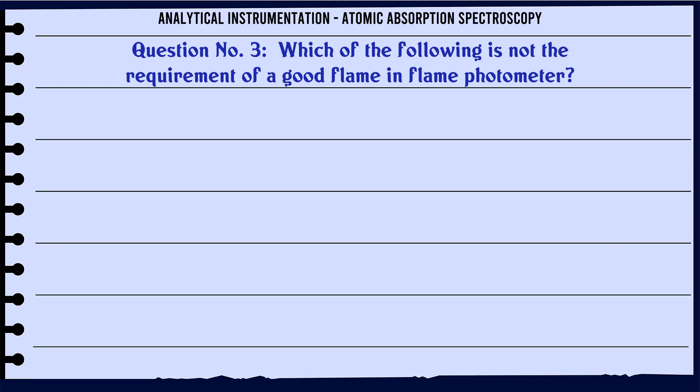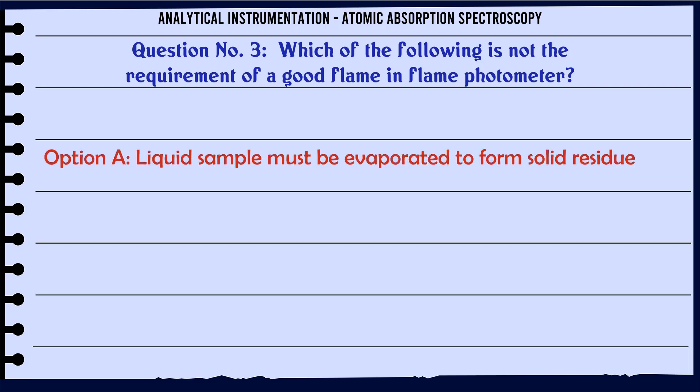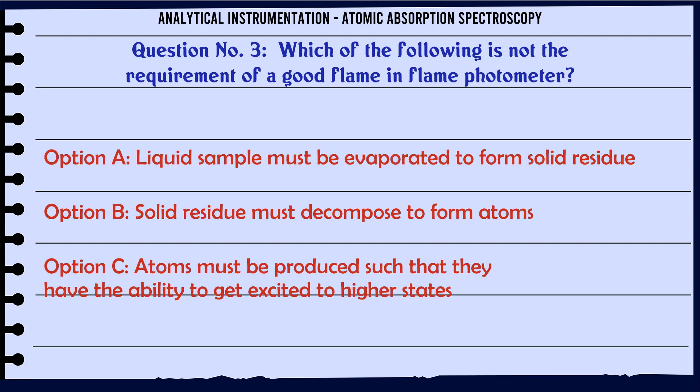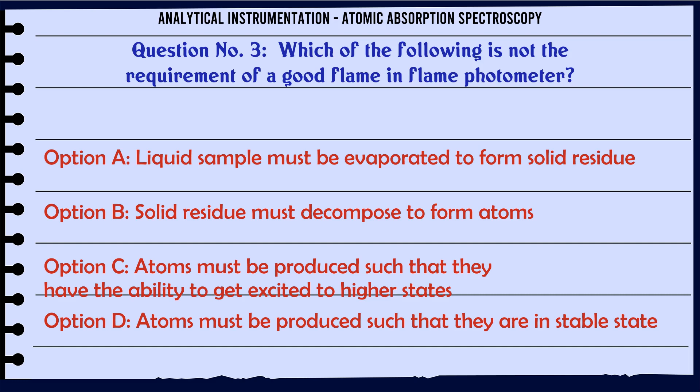Which of the following is not a requirement of a good flame in a flame photometer? A. Liquid sample must be evaporated to form solid residue. B. Solid residue must decompose to form atoms. C. Atoms must be produced such that they have the ability to get excited to higher states. D. Atoms must be produced such that they are in a stable state.